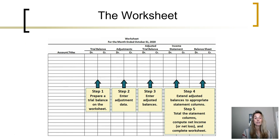The worksheet looks something like this. We can see there is really a set of five different column groups: the trial balance with debits and credits, adjustments with debits and credits, the adjusted trial balance with debits and credits, the income statement with debits and credits, and the balance sheet with debits and credits.